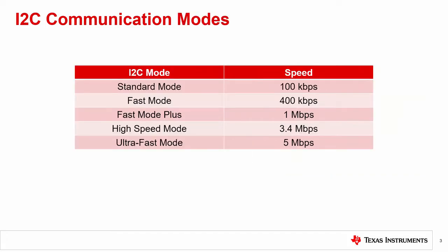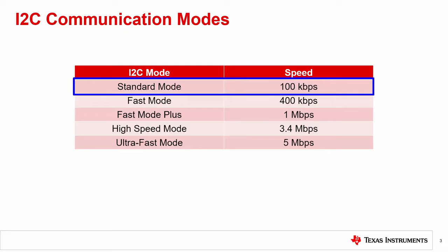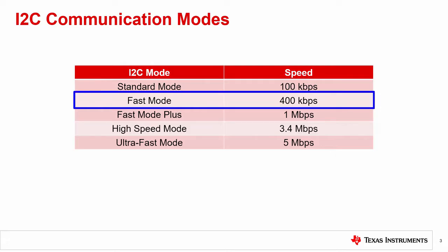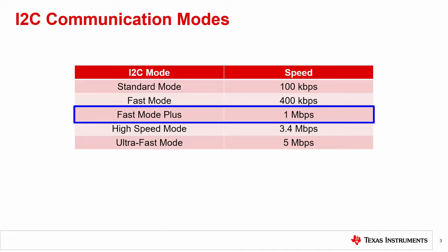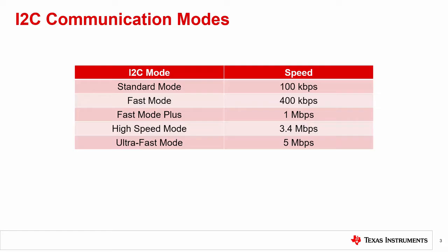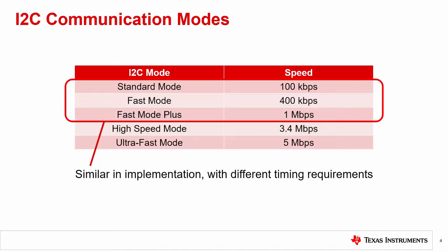I2C has several speed modes, starting with the standard mode, which is a serial protocol that goes up to 100 kilobits per second. This is followed by the fast mode, which tops out at 400 kilobits per second. Both of these protocols are widely supported and may be used by the controller if the bus capacitance and drive capability allow for the faster speed. The fast mode plus allows for communication as high as 1 megabit per second. These three modes are relatively similar, using a communication structure that is the same.